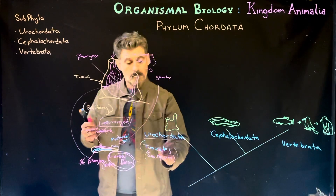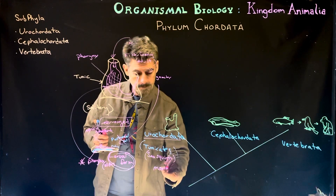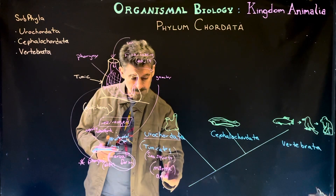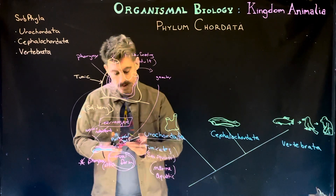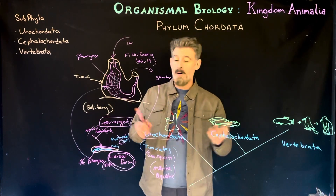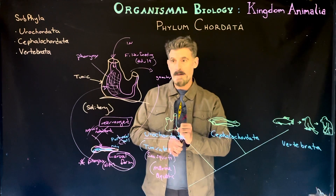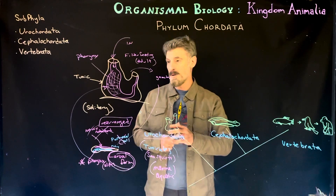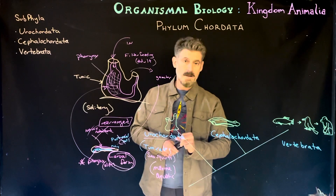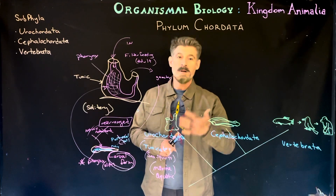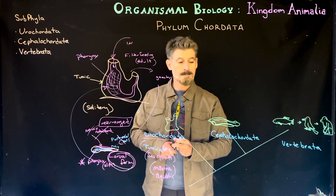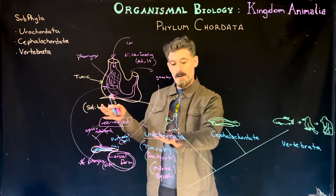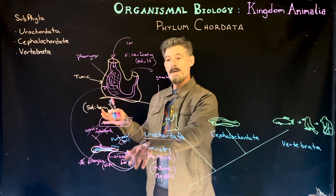Urochordates are marine animals found in the oceans — they're obviously aquatic — found in a variety of habitats, sometimes even in brackish water, in all different types of climates, warmer and colder waters, deeper and more shallow. As filter feeders, they need a large amount of plankton in the water, so you'll usually find them in areas of higher productivity. The key thing to know is that urochordates display chordate characteristics in a larval form, but the adult does not.